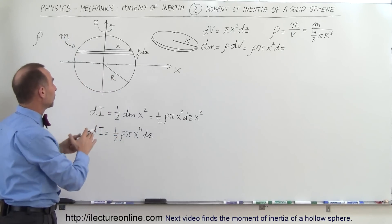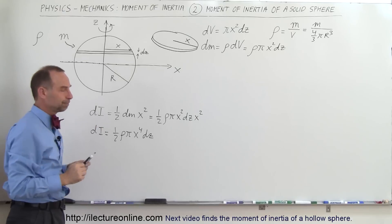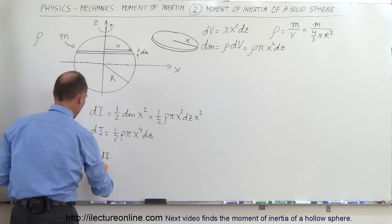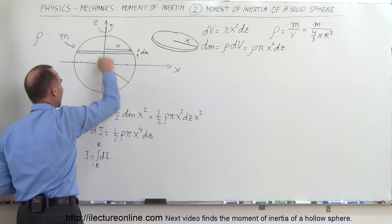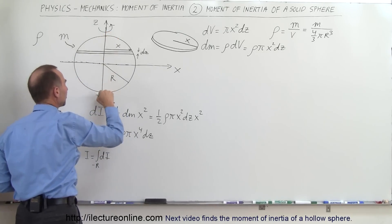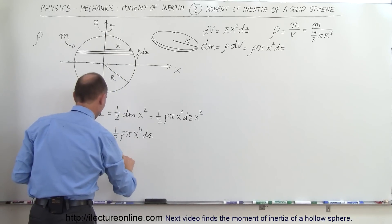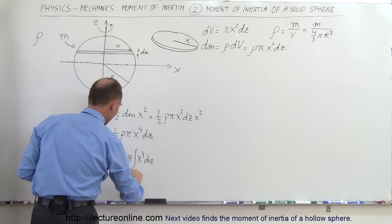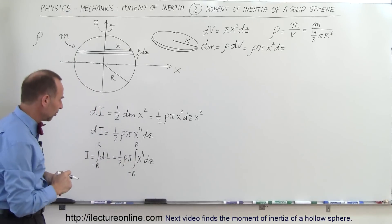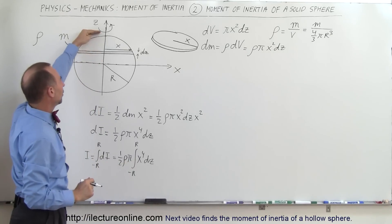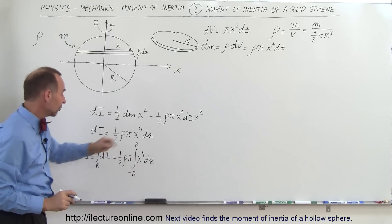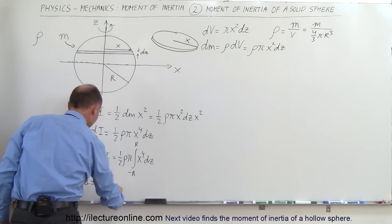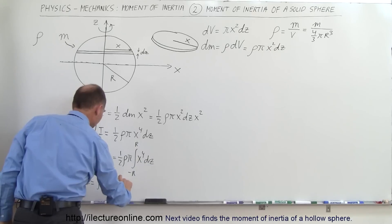To find the total moment of inertia we integrate over all the little slices, so I equals the integral from −R to R of DI, which is one-half rho pi times the integral of x⁴ DZ from −R to R. By symmetry, we integrate from 0 to R and double it, giving I = rho times pi times the integral from 0 to R of x⁴ DZ.